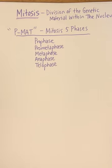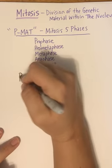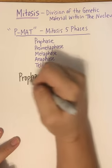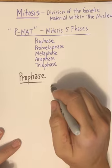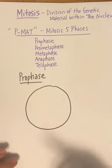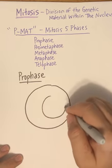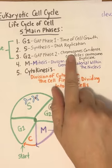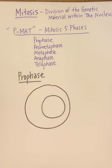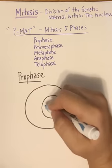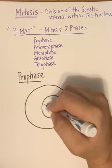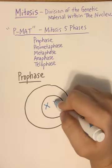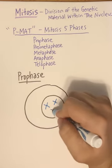Now I'm going to draw out each of the phases and we're going to start with prophase. Inside of the nucleus, in your gap two phase your chromosomes start to condense. In prophase your chromosomes are going to continue to condense and basically become visible. Your chromosomes are duplicated, they begin to be visible, they are condensed so you can see them.